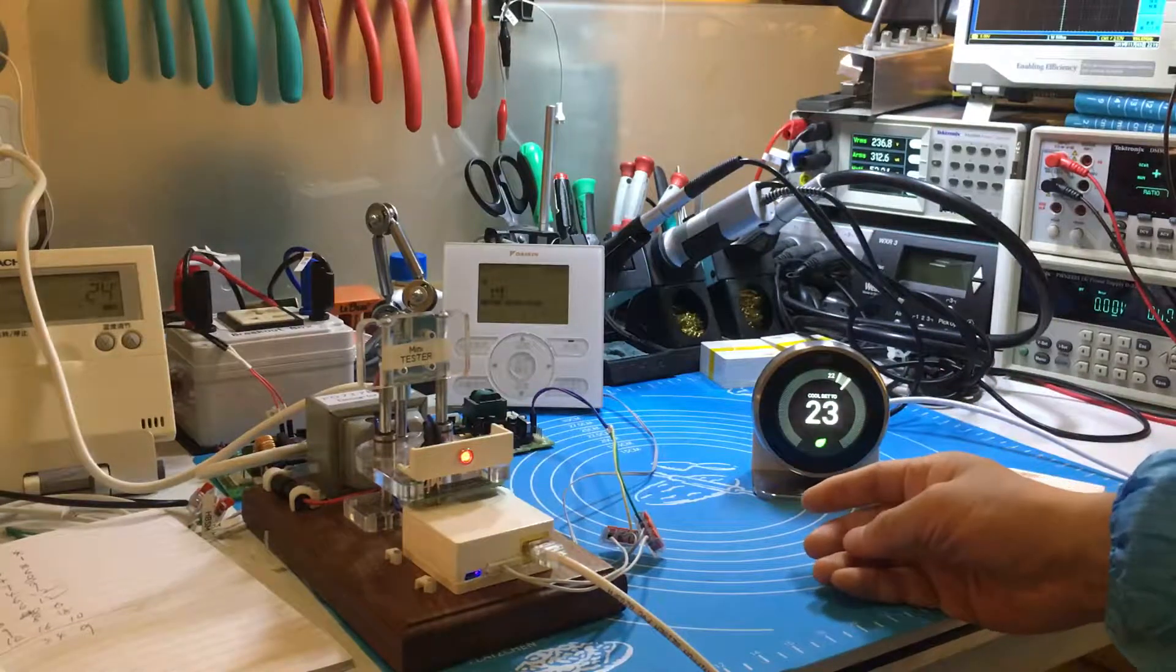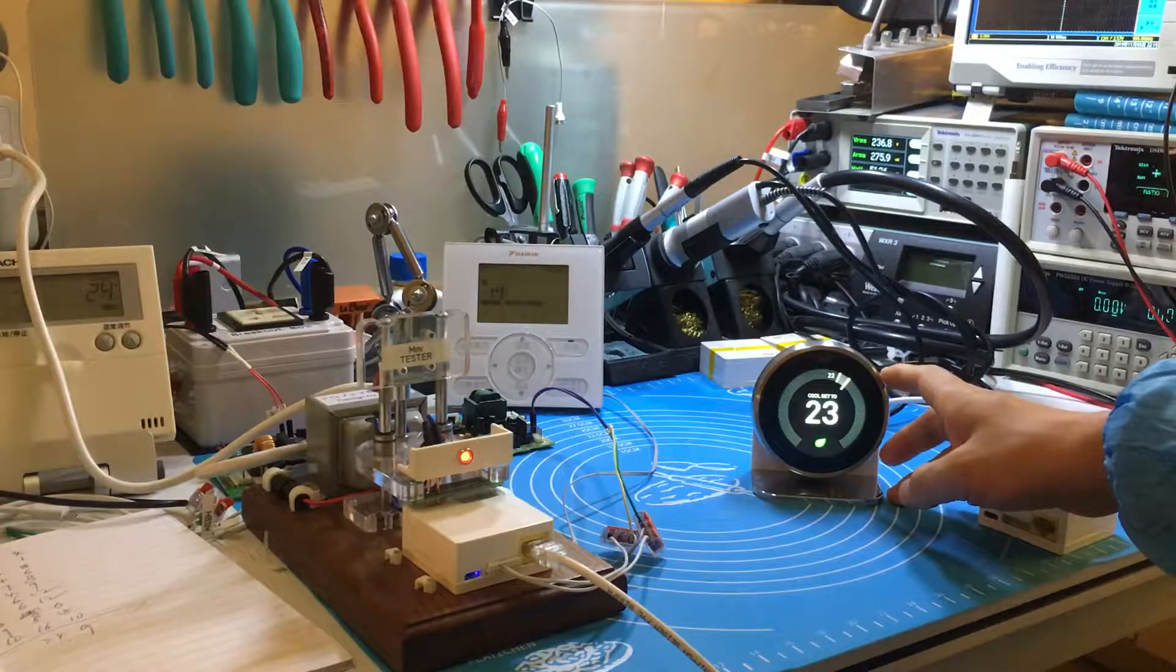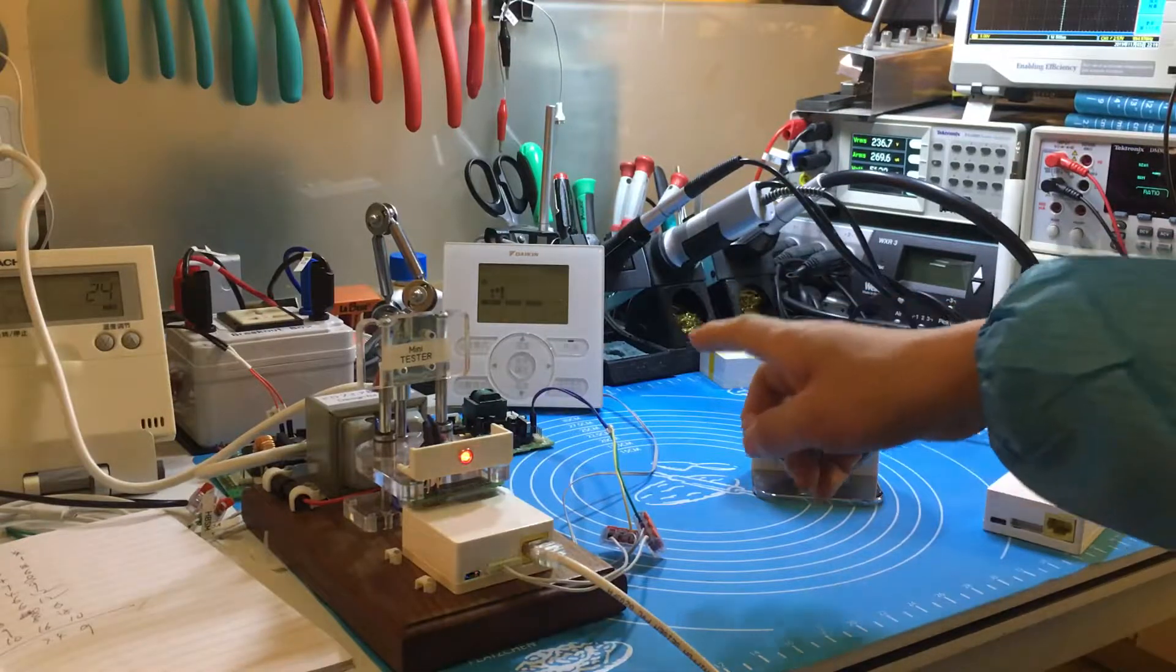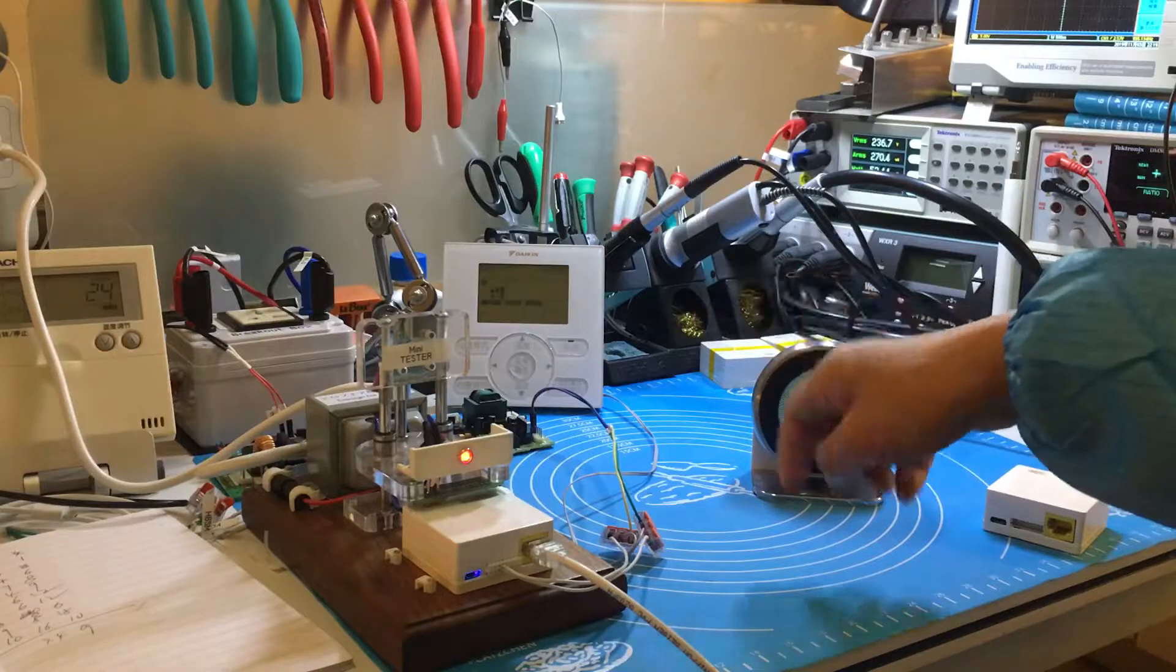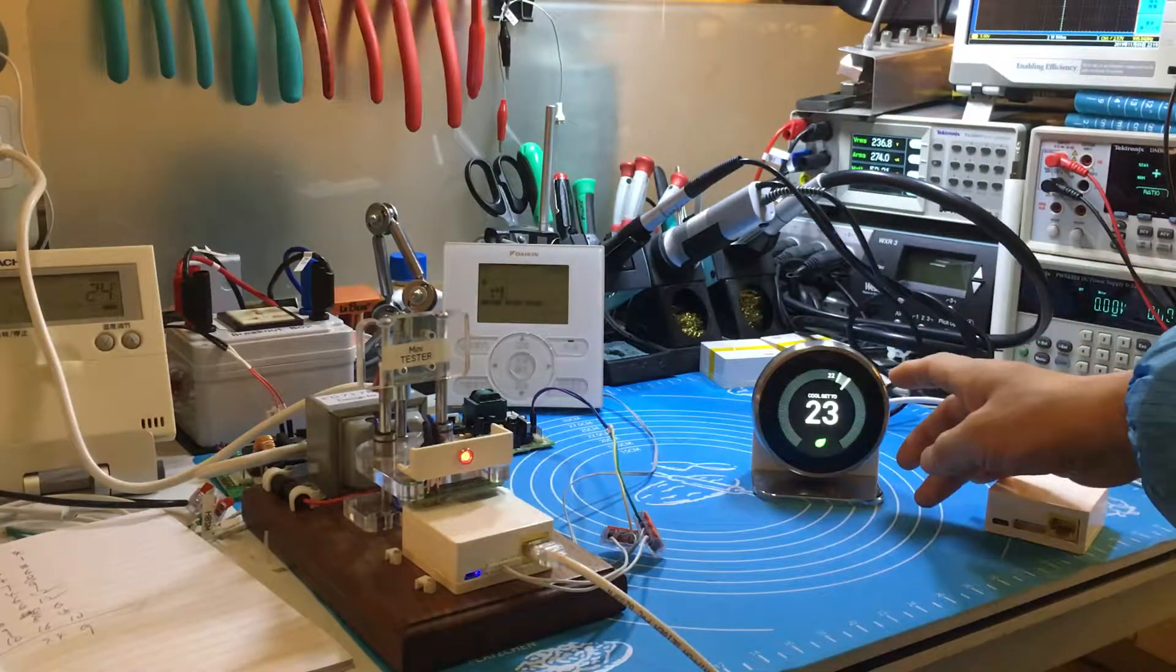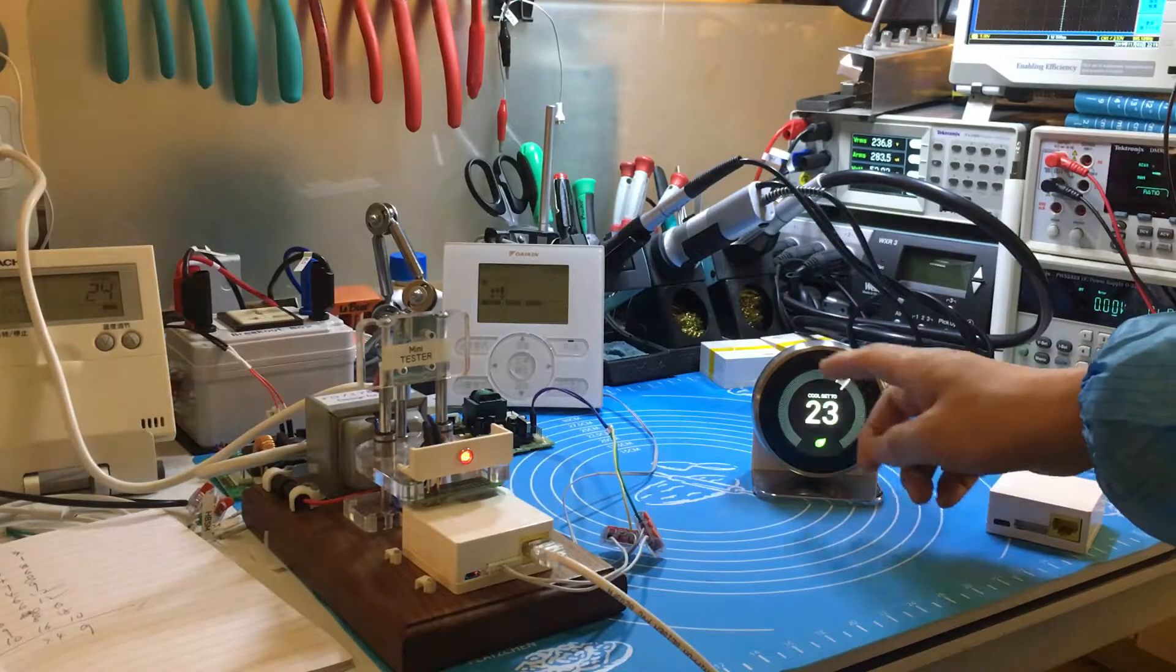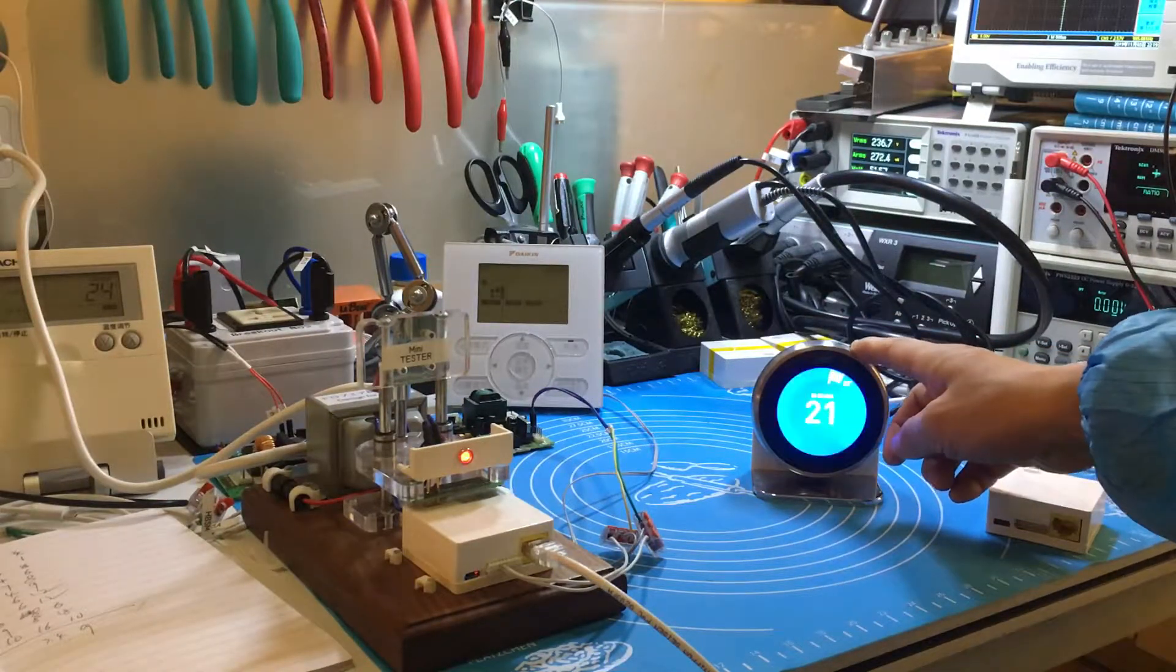Now let's see how it controls and we start cooling. Now the Daikin thermostat is closed. Now we begin to start. Let the Nest adjust the temperature down and start cooling.